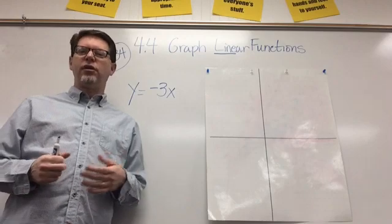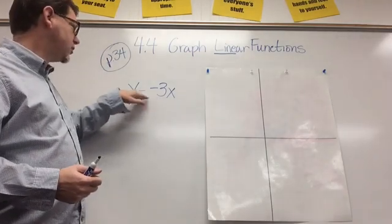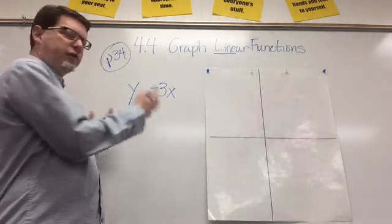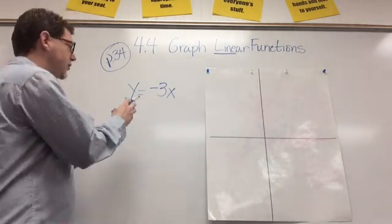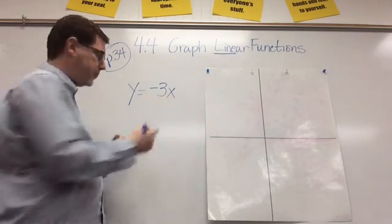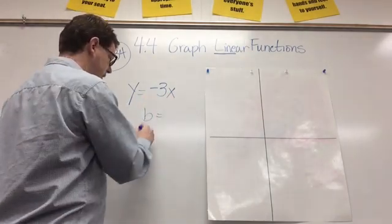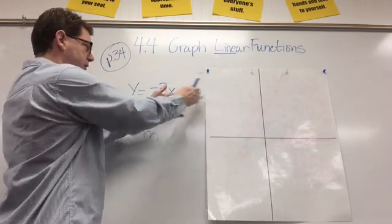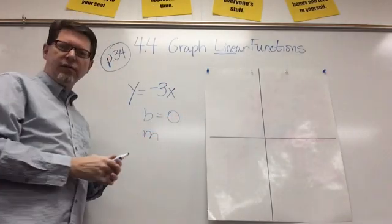The next linear function that we're going to look at is Y equals negative 3X. And so, we're going to figure out how I would graph this line. So, Y equals negative 3X. I need to pick out my B and the M. Well, the B would be whatever is plus over here. Well, there's nothing there, so B must equal 0.